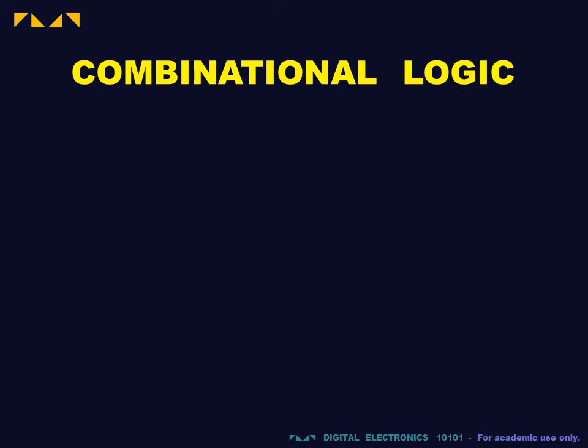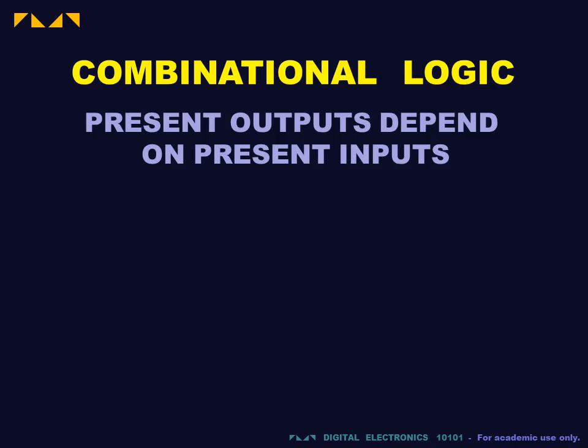The simplest form of logic occurs where the outputs depend only on the present state of the inputs. This is called combinational logic. Combinational logic has no memory of past states nor anticipation of future states.